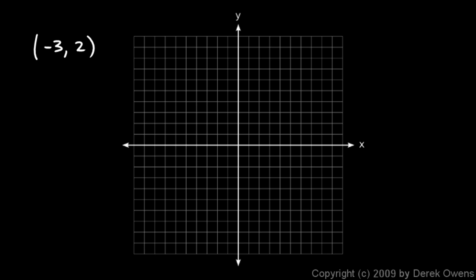Next we're told to plot the point negative 3, 2, so we need to go to the left 3. Starting right here, don't count that as 1 — remember the origin is 0. Some people count right here and they count 0, 1, 2, or if you start counting right here with 1 and count 1, 2, 3, you end up with the incorrect position.